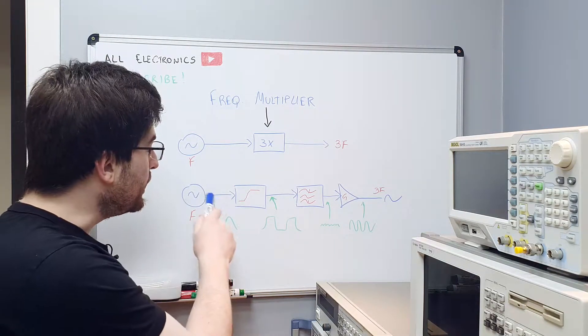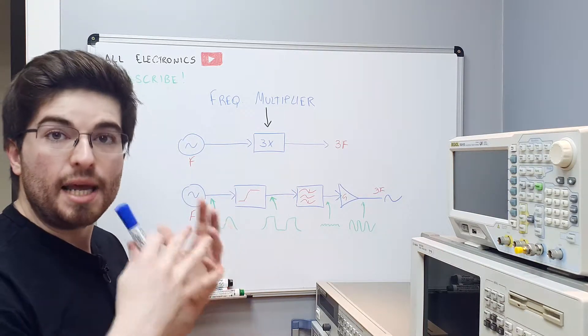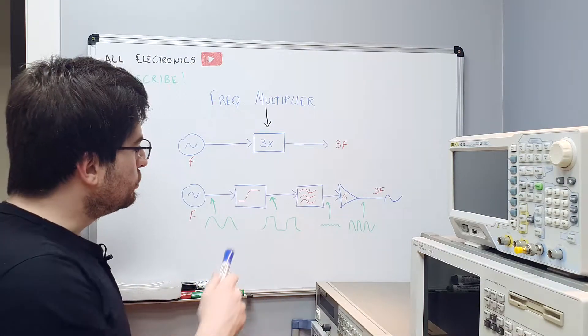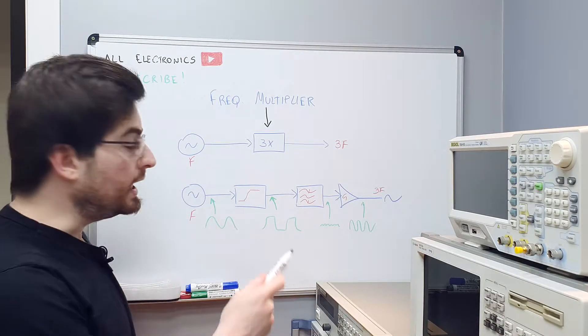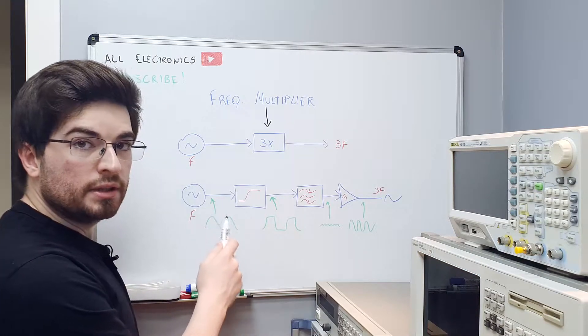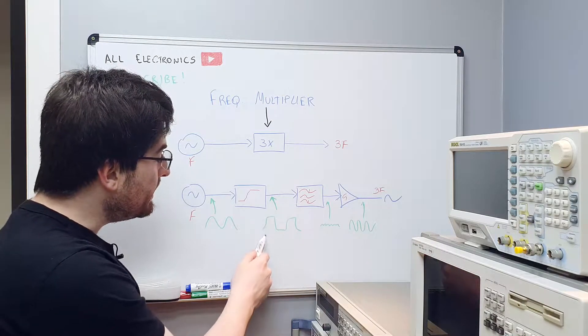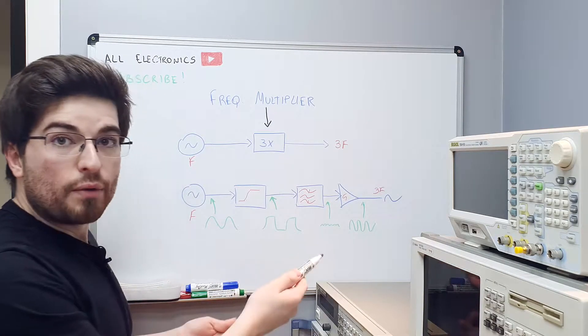We start with an input frequency that is the input of our multiplier block, and we amplify it until it clips or clamps. So we add a lot of harmonic distortion on the signal. The output of the clipping block is a signal that has the same phase of the input, the same frequency, but it's rich in harmonics because it clipped and now it looks like a square wave.